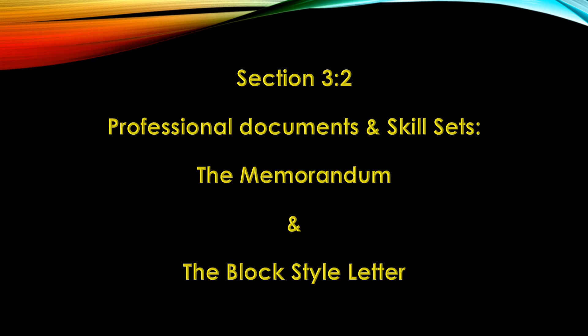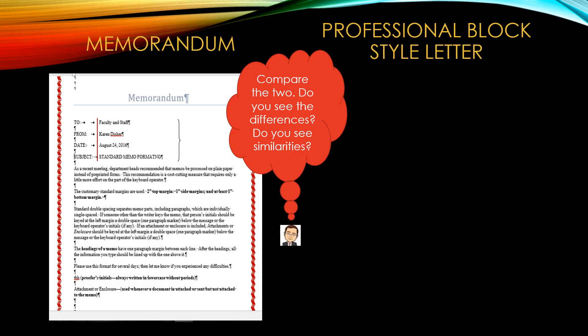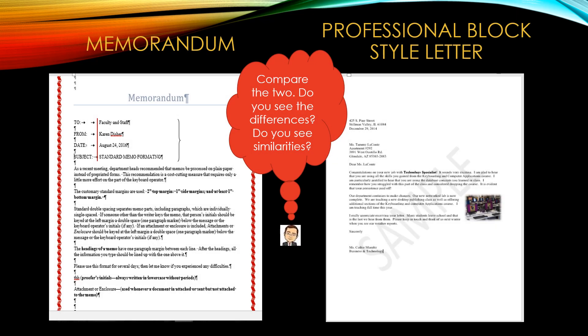Section 3-2. We will be looking at professional documents and skill sets that are used with these professional documents. The first professional document we will review is the memorandum. The second professional document will be the block style letter. On the left is an image of a memorandum and on the right is an image of the professional block style letter. Notice that though there may be similarities, there are also differences between the two.